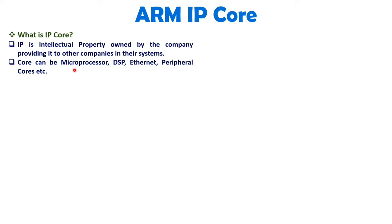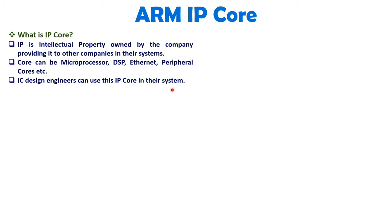The IP core is intellectual property owned by the company, and that company provides their core to other companies for their system. The core can be of a microprocessor, DSP, Ethernet, or peripheral cores. But ARM is designing a processor core. IC designers can use this IP core in their system — there will be a processor, DSP, floating point unit, math coprocessor, direct memory access, and peripheral cores. With the combination of all those IP cores, they design an embedded system. IC designers use ARM IP core as a processor in their chip.